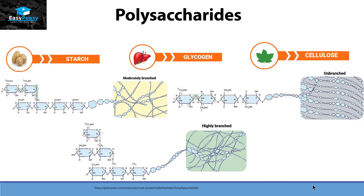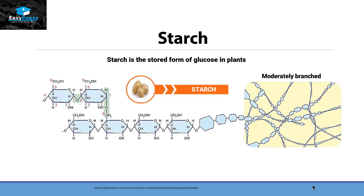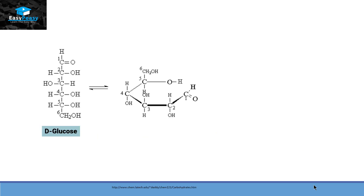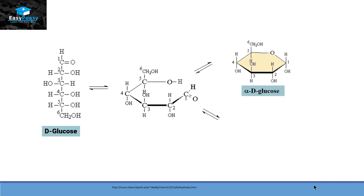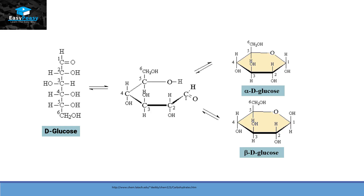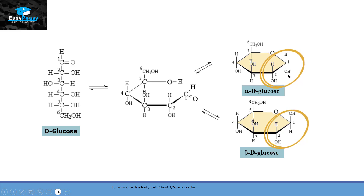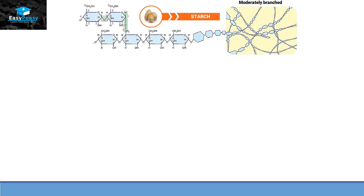Starch is the stored form of glucose in plants and it is a polymer of alpha glucose subunits. Alpha and beta categories were discussed in the monosaccharide video, but briefly: if a compound is in cyclic condition, it can exist as alpha or beta structure depending on the OH present on carbon number one. In alpha glucose, this OH is present in a downward direction, and in beta glucose it is present in an upward direction.